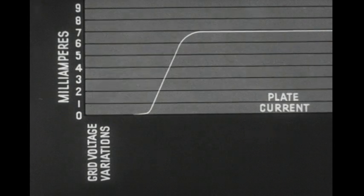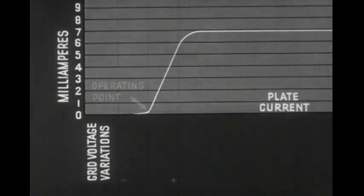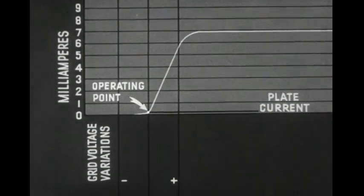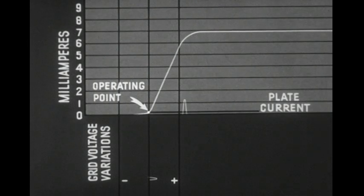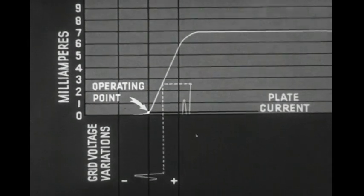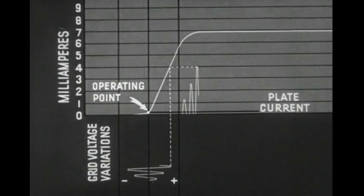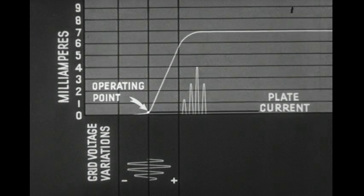The vacuum tube may also be operated as a detector. When used for this purpose, the grid bias is adjusted so that the operating point of the tube is just below the straight portion, or knee, of the characteristic curve. As a result, the positive half-cycle of the radio-frequency current in the grid circuit is amplified much more than the negative half of the cycle.